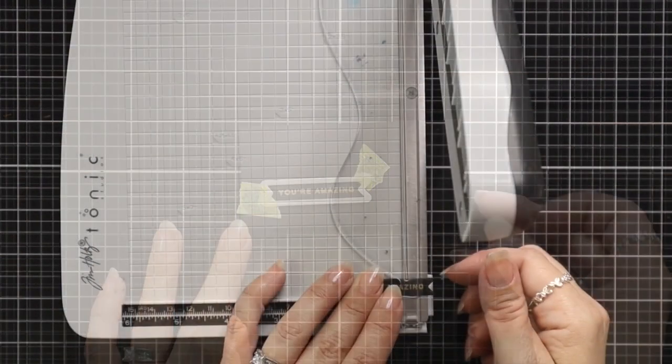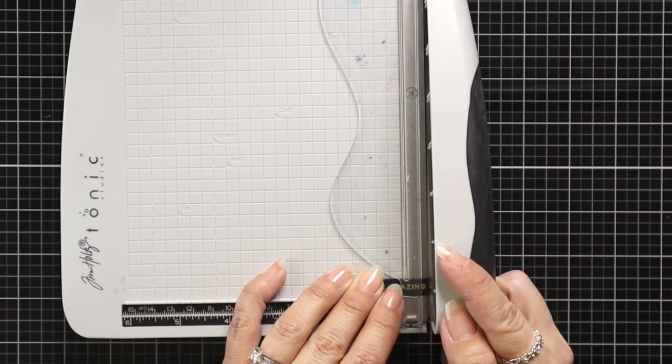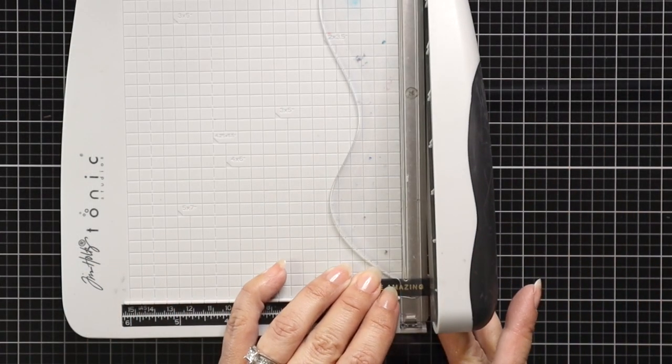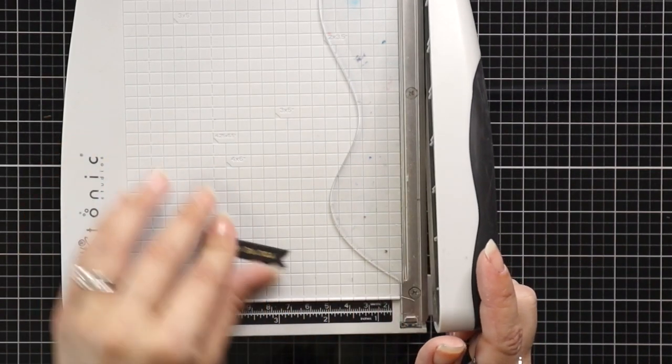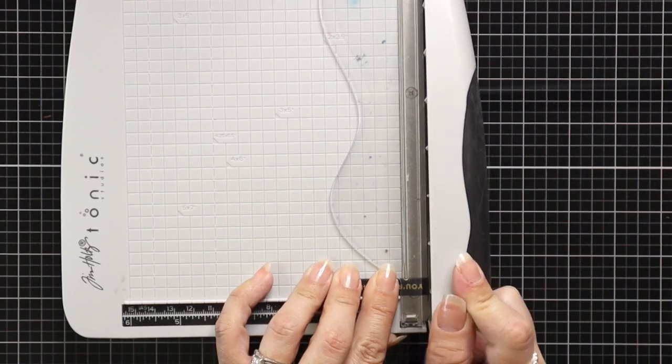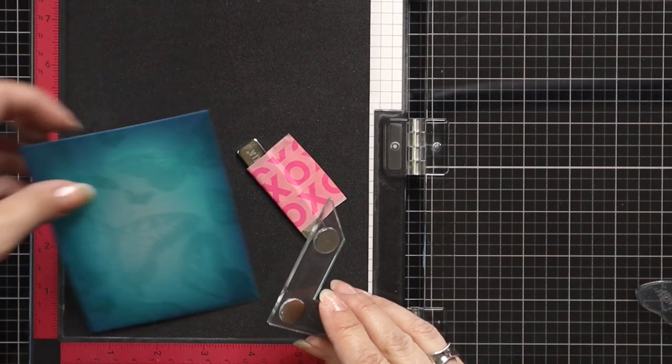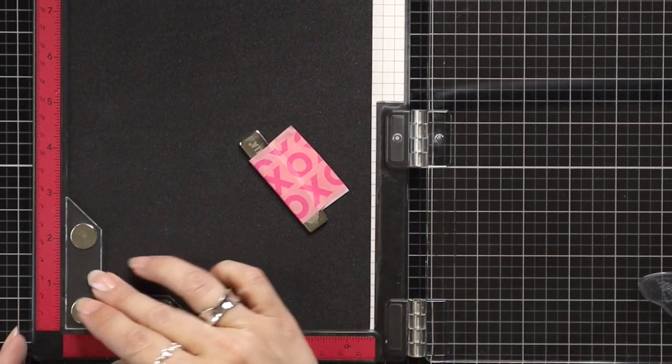Now you could definitely just trim this down with your paper trimmer. I for one do not seem to trim very straight when it comes to these small sentiments and I really like the beveled edge that the dies leave. Now I'm not really a huge fan of the flags on the end so I'm just going to take my paper trimmer and trim those off but you can definitely leave them on or just trim your sentiment down with your scissors or paper trimmer.